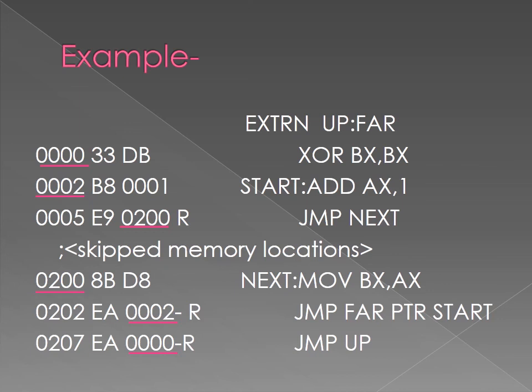As mentioned earlier, this example works in a similar manner. The statement 'start: MOV AX, 1' has memory location 0002. To jump to this memory location, in the second-to-last instruction, the relocatable address 0002 is used. In a similar manner, the other two jump instructions are executed as well.